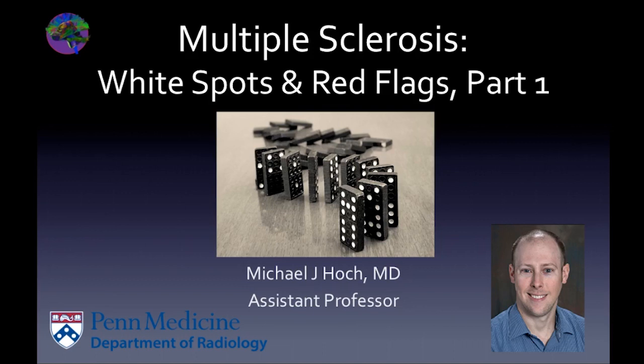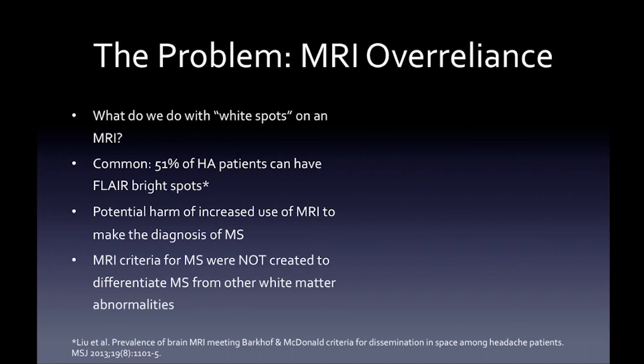The problem is the over-reliance on MRI to make a clinical diagnosis of multiple sclerosis. What do we do with an MRI study when we see white spots? For example, 51% of headache patient MRIs can have FLAIR-bright white spots. How do we stay out of trouble and better diagnose MS or its mimics?